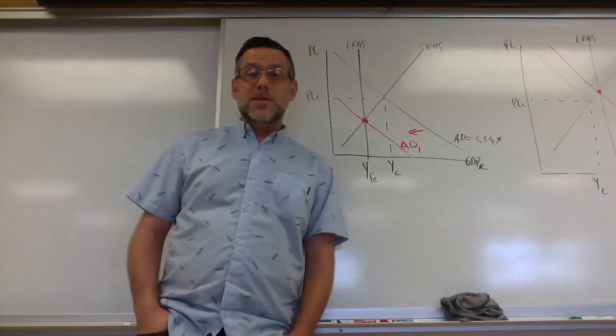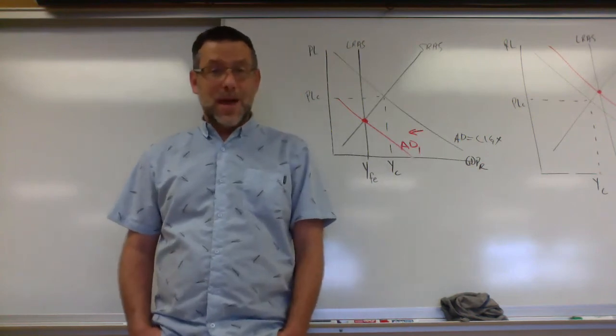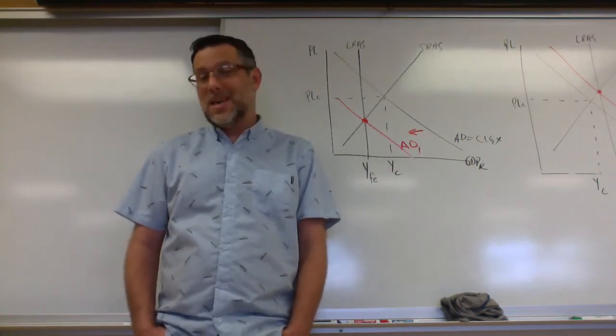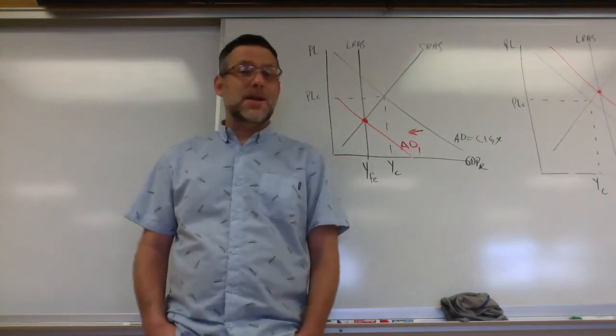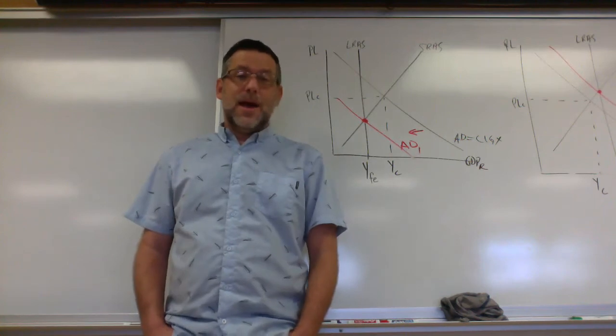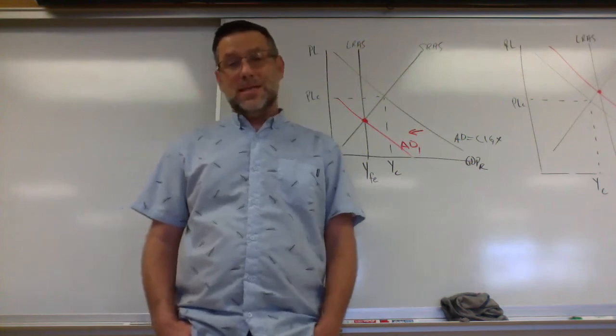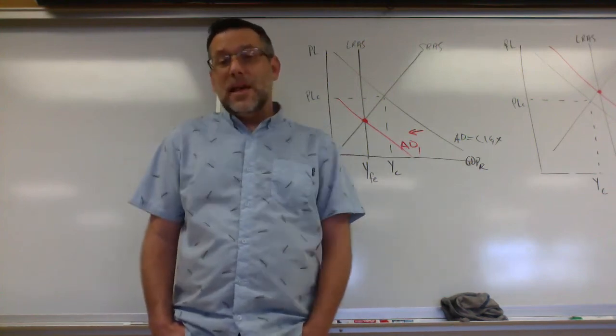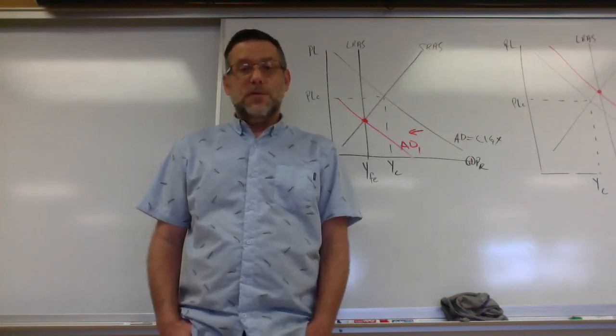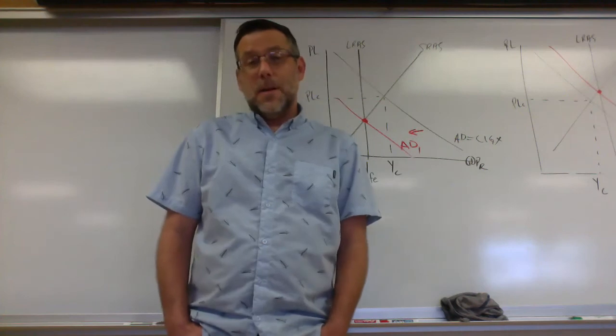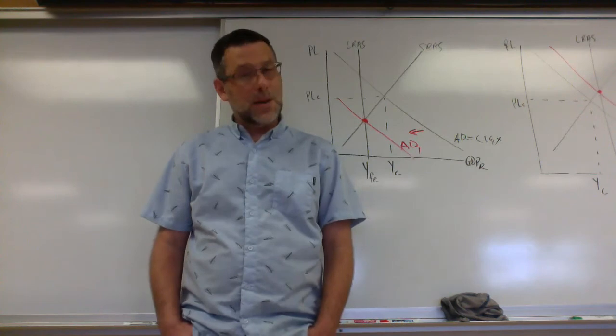So immediately, government spending went up to close that gap of this falling aggregate demand leading to a recession. So that's like an automatic stabilizer. Food stamps is another example of this. When more people are losing their jobs, they qualify for a government program like food stamps where they can get assistance to buy food. Immediately during a recession, the government starts spending more money on food for low income people, because they qualify for that program. So the government automatically starts spending more on those kinds of things. It's called an automatic stabilizer.